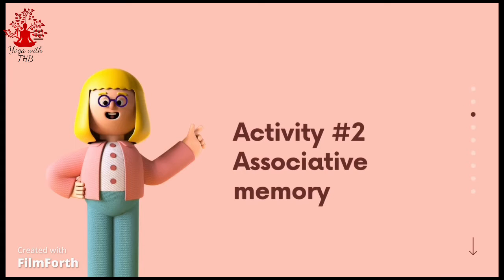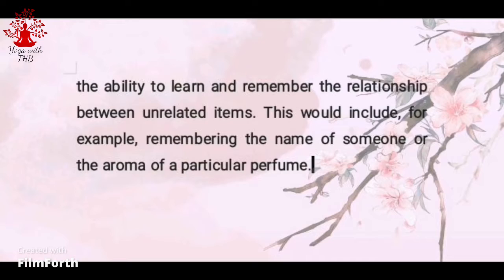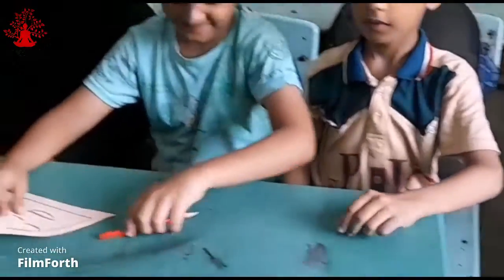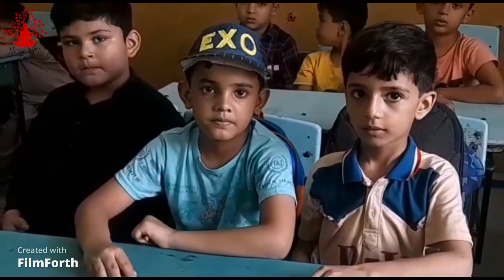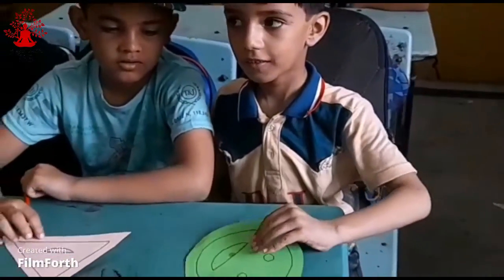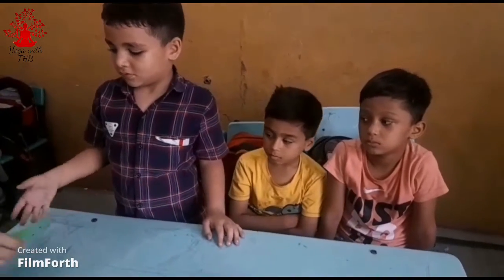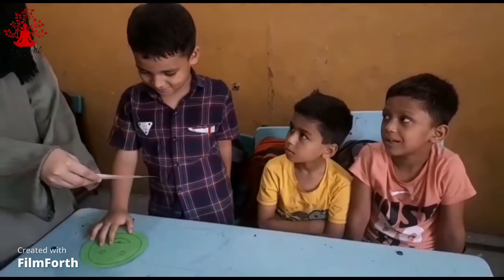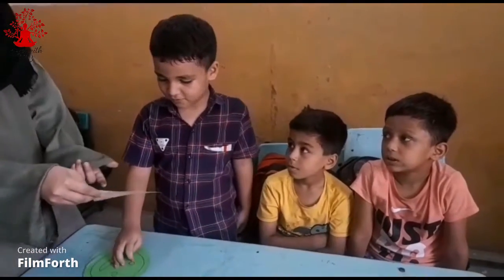Second activity: ab hum bachon se karwayenge jisme hum logo bachon ko kuch shapes denge aur wo us shapes ko pehchanne ki koshish karenge. Jaise ki abhi hum is bachche ko ek triangle shape de rahe hain aur hum use pooch rahe hain ki is shape ka naam kya hai. Second bachche ko humne ek circle shape di aur use bhi yahi sawal kiya ki is shape ko aap pehchante hain ya nahi. Is bachche ne circle bataya lekin triangle ko wo guess nahi kar saka.